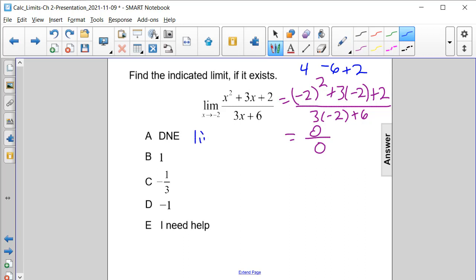So we have the limit of x plus 2 times x plus 1. And I found that because the factors of positive 2 that add up to positive 3 are positive 2 and positive 1.